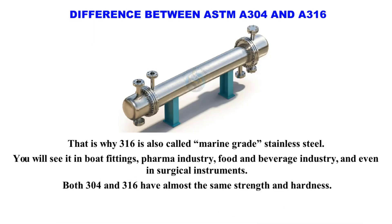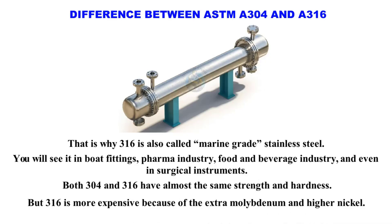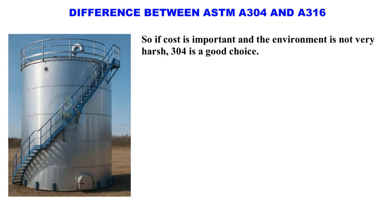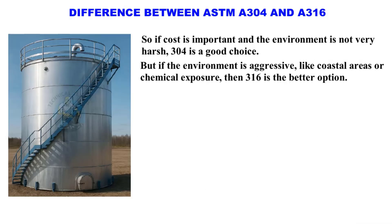Both 304 and 316 have almost the same strength and hardness. But 316 is more expensive because of the extra molybdenum and higher nickel content. So if cost is important and the environment is not very harsh, 304 is a good choice. But if the environment is aggressive, like coastal areas or chemical exposure, then 316 is the better option.